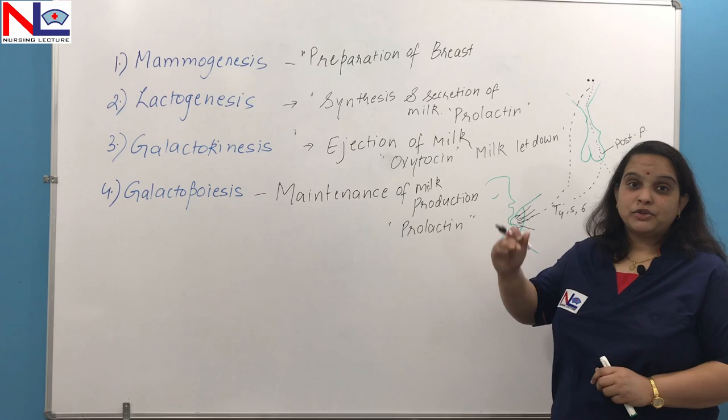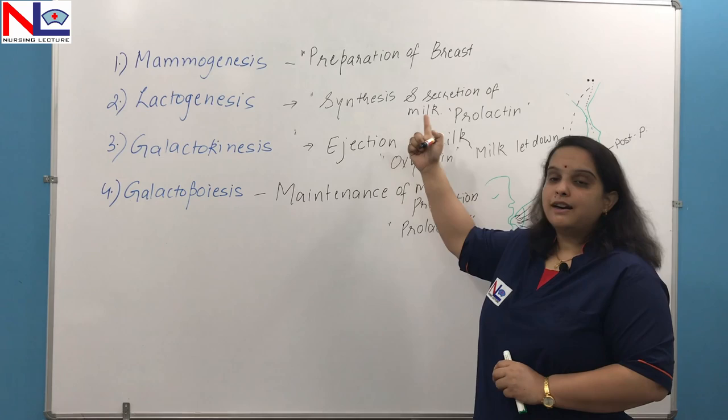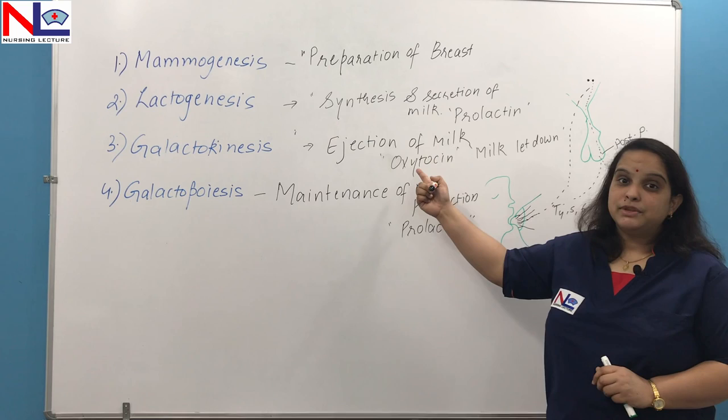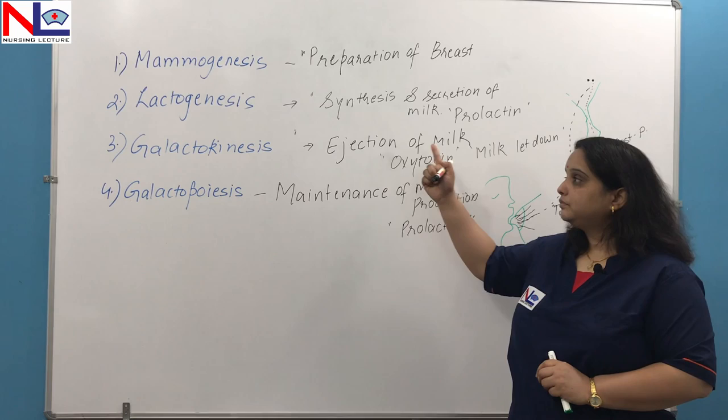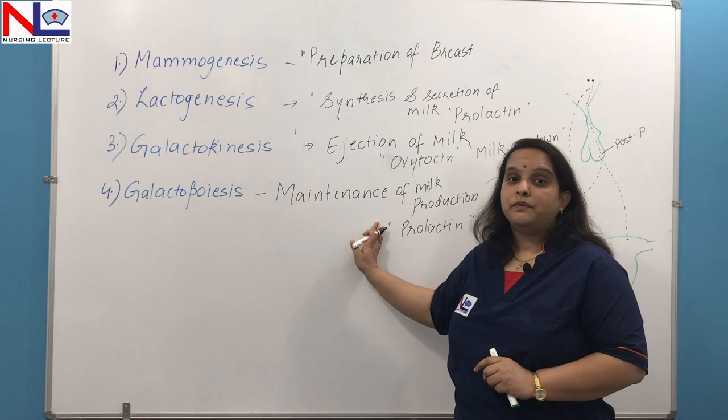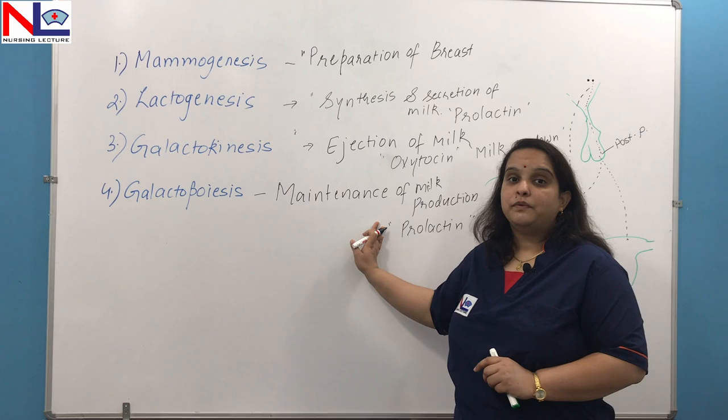So in this lecture we have discussed the physiology of lactation in four steps: the preparation of breast is mammogenesis; once prepared, it starts synthesizing milk from these tissues, that is lactogenesis; once synthesized, there is need to eject the milk, that is galactokinesis; and there is a requirement for the maintenance of milk production — galactopoiesis — because this is the only feed that the baby wants. Thank you.